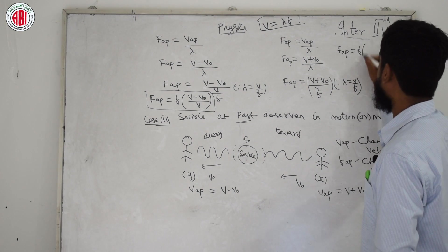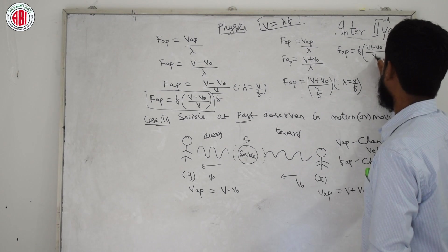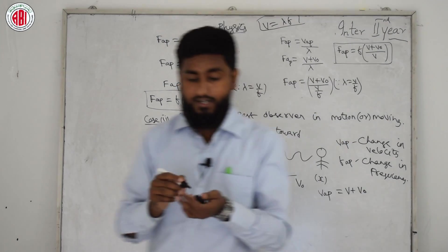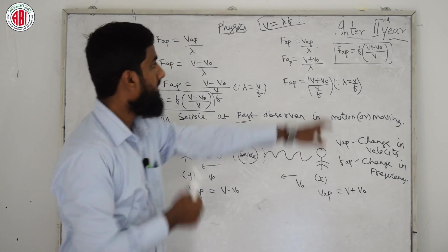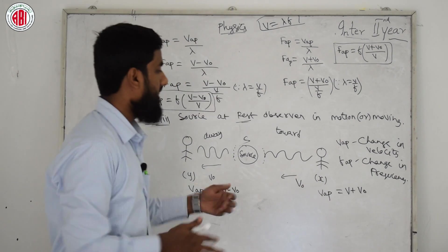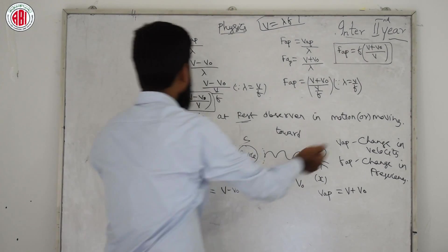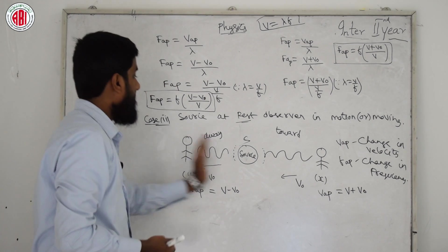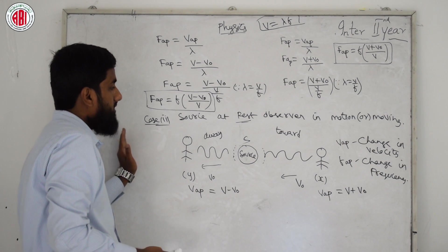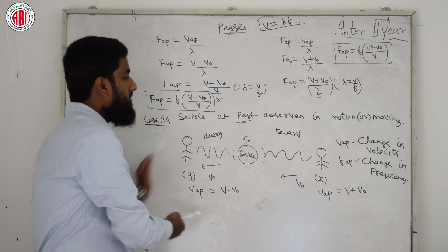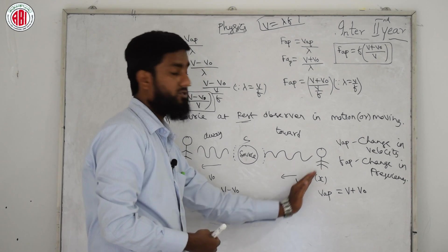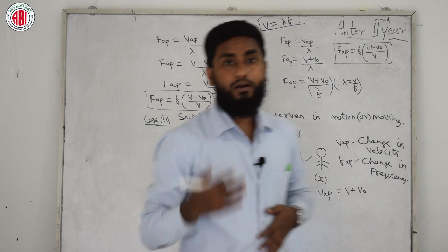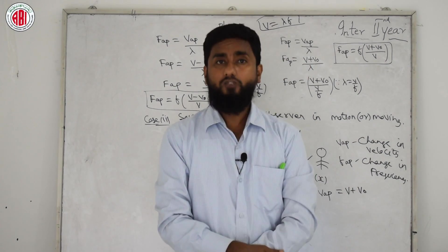So: for observer X (approaching source): f_ap = f(v + v₀)/v — frequency increases. For observer Y (moving away): f_ap = f(v − v₀)/v — frequency decreases. This is because Y is going farther from the source while X is getting closer, so X hears a higher frequency.